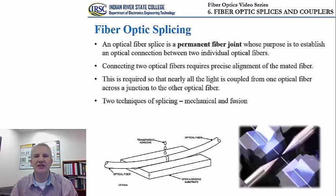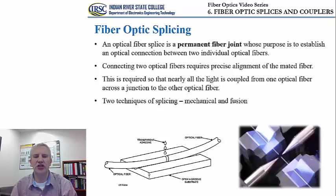There are two distinct techniques for fiber optic splicing: mechanical splicing and fusion splicing. On the left side you can see an example of mechanical splicing where two optical fibers are brought into close contact. A transparent adhesive is placed at the junction between the two fibers. This transparent adhesive has very similar optical properties to the glass cores, so when the light reaches this junction during propagation, it will not be refracted or reflected, but will pass through into the other optical fiber.